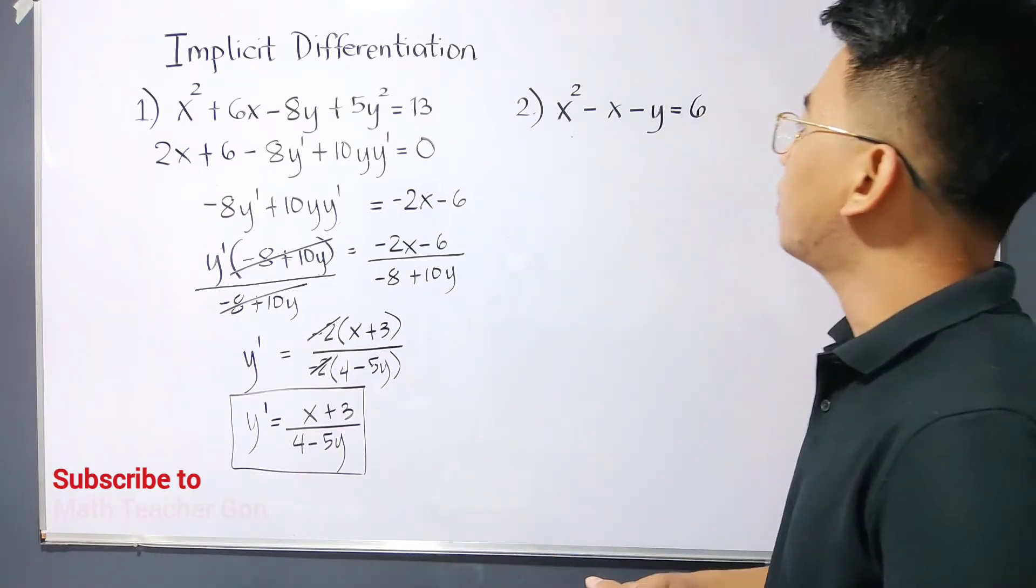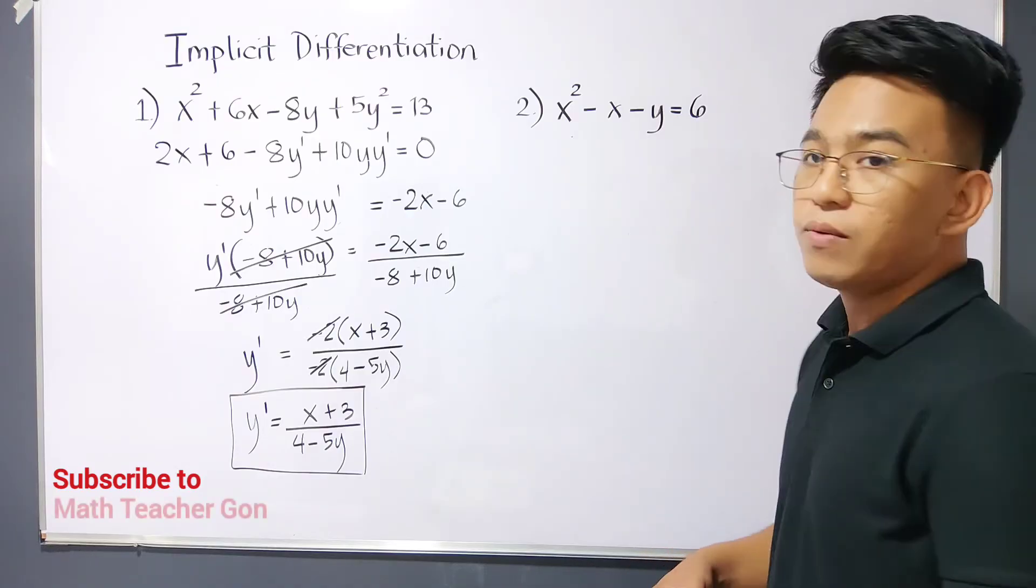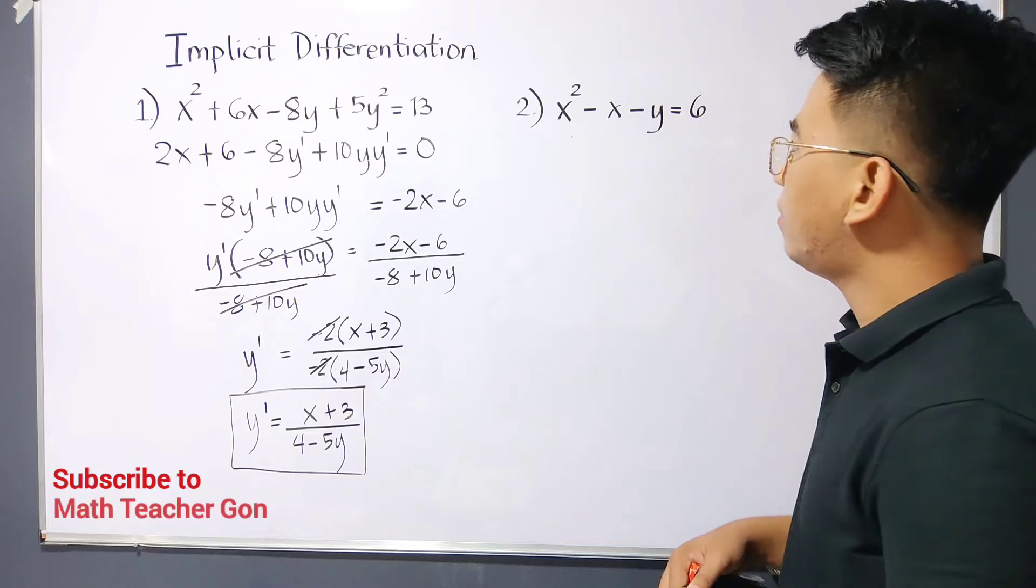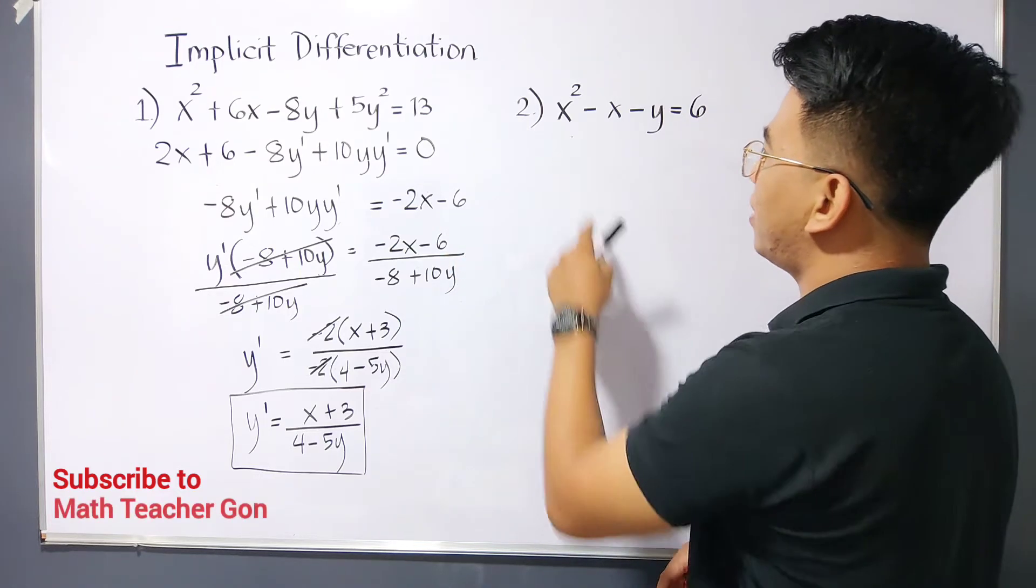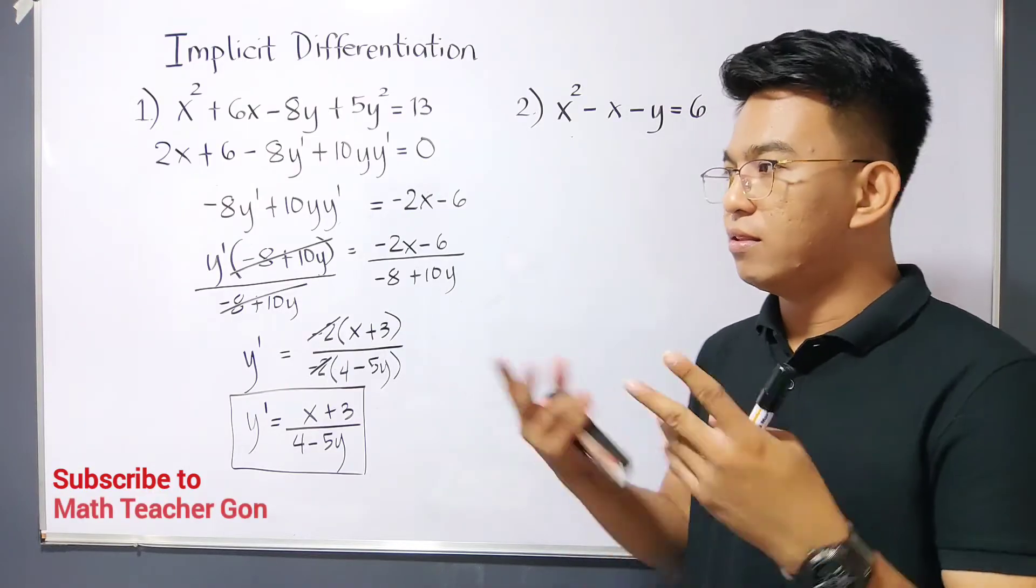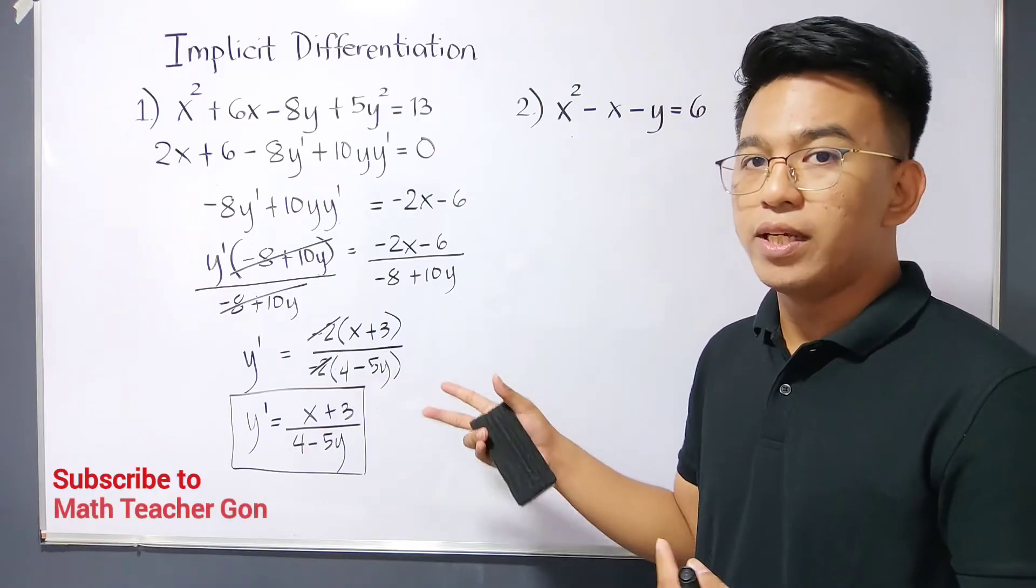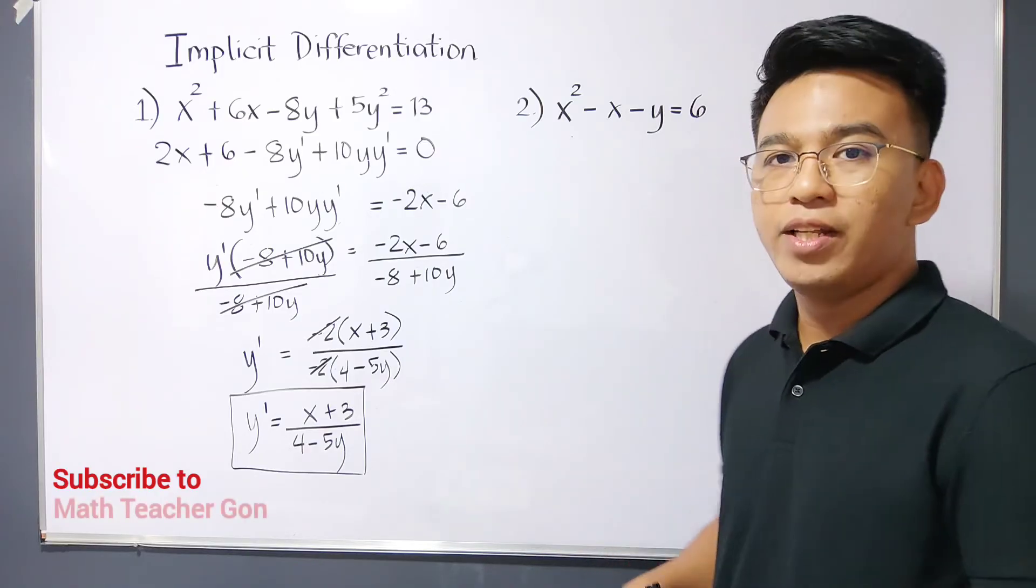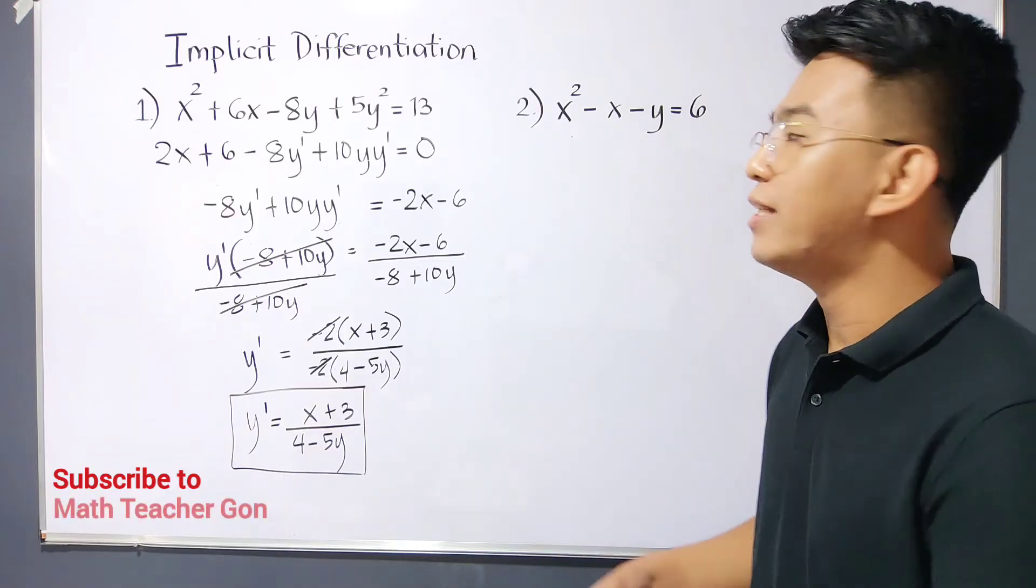Let's continue. For number 2, we are given x squared minus x minus y equals 6. This is harder than number 1. Same process. You can pause the video and try to do this.